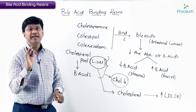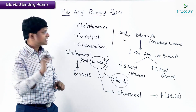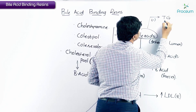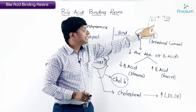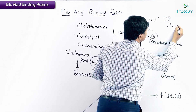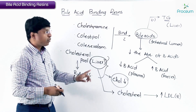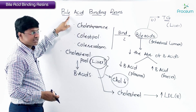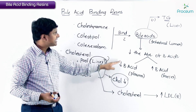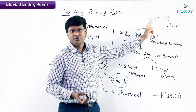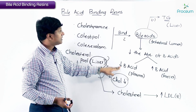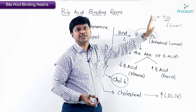Another important point: bile acids, when present, inhibit triglyceride production in the liver. Now, whenever you are giving these drugs, the bile acid content is reduced. So when bile acid content is reduced, they cannot inhibit triglyceride production.